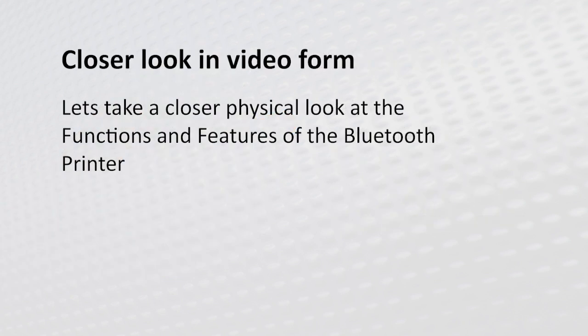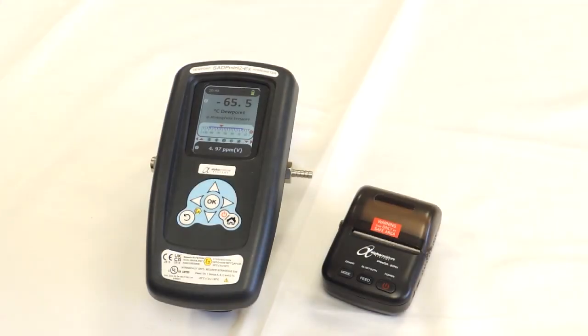Let's take a closer physical look at the functions and features of the Bluetooth printer. This demonstration is going to show you how to use the Bluetooth printer with the SADP Mini 2 EX. First of all turn the Bluetooth printer on by pressing and holding the power button until you hear a noise. Release and that has the power on for Bluetooth printer.